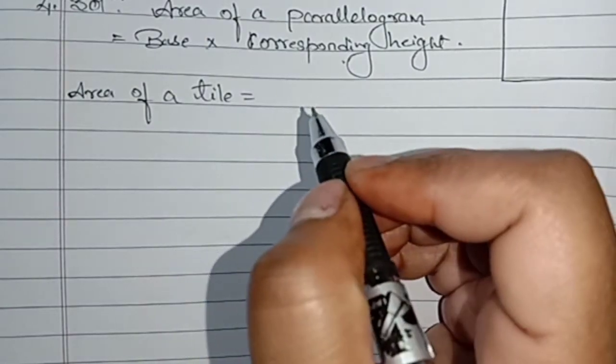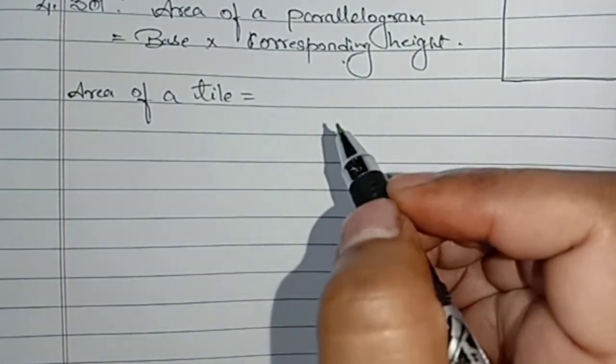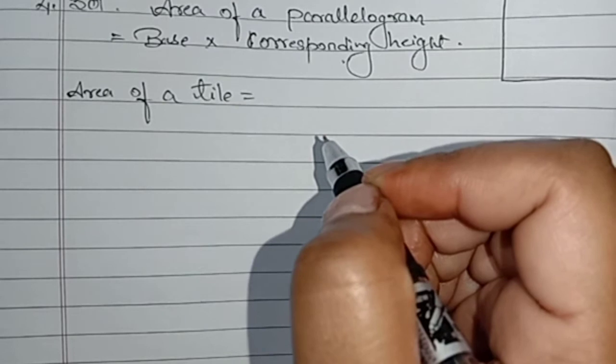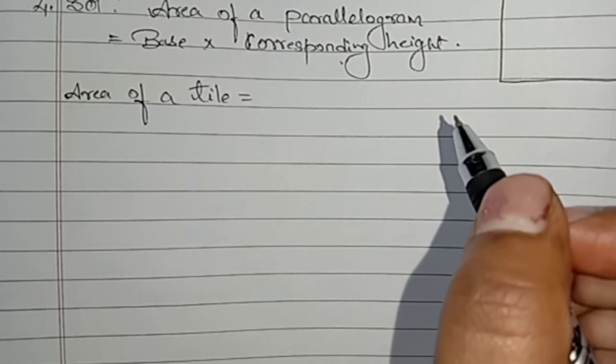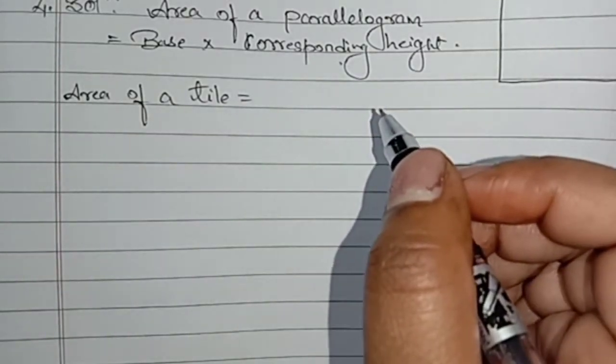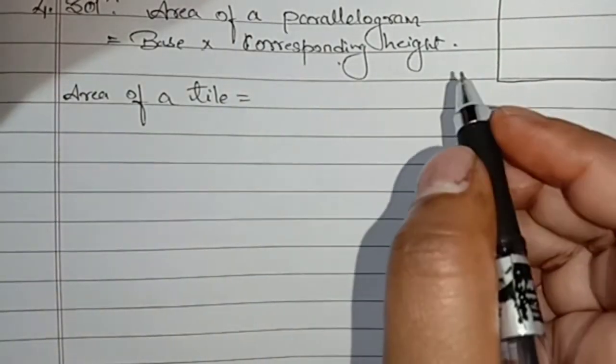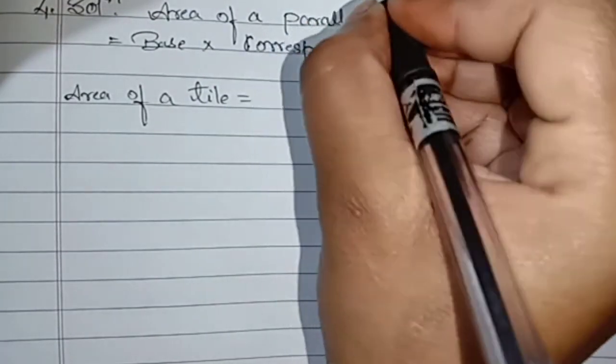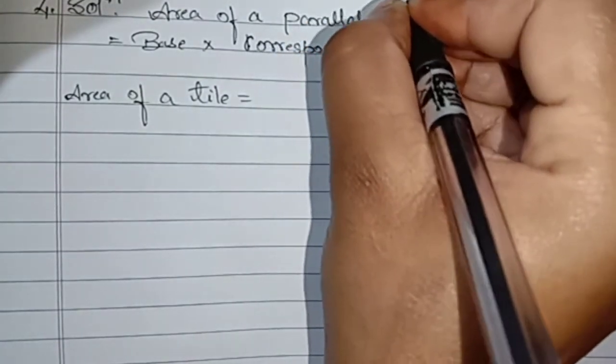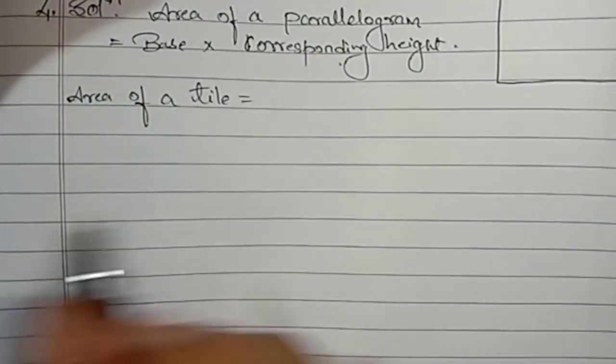Area of a parallelogram means area of a tile which is equal to base into corresponding height. Base is given 24 centimeter but we will check the area of a floor. We will change centimeter into meter and we know 1 meter equal to 100 centimeter.